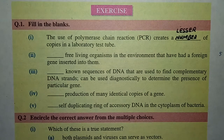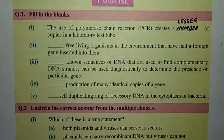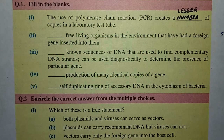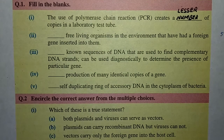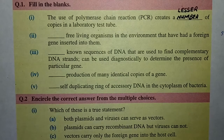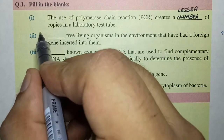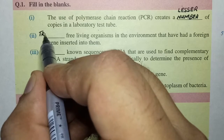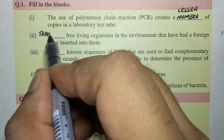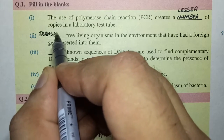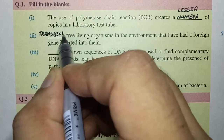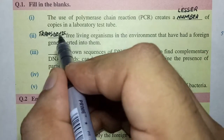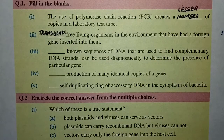Let's go to the next filling the blank: 'Dash free-living organisms in the environment that have had a foreign gene inserted into them.' So what do we call organisms into which an outside gene has been inserted? They are called transgenic organisms — transgenic, meaning the foreign genetic material has been transferred into them.